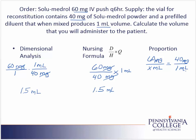This is a true proportion, and I can solve it with the cross product. Multiplying on the first diagonal, 60 times 1 is 60. Multiplying on the second diagonal, 40 times x is 40x. To continue solving, I divide by 40 on both sides to isolate the variable. On the right hand side the 40s cancel, leaving me with x equals. On the left I do the math and I get 1.5. I check back in my proportion, and the label for that 1.5 is milliliters.